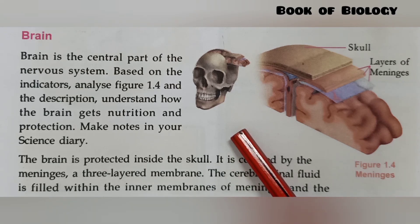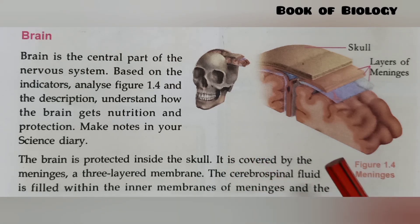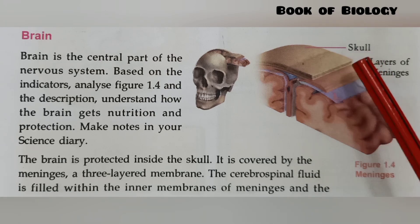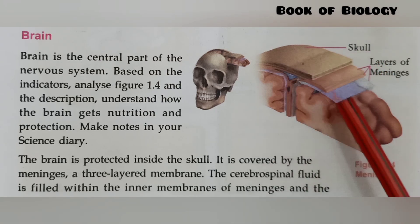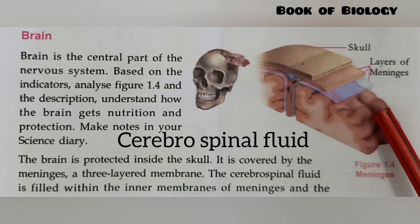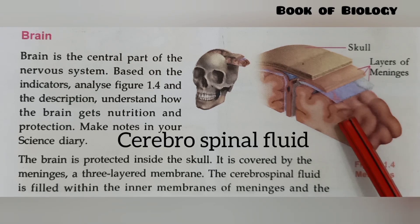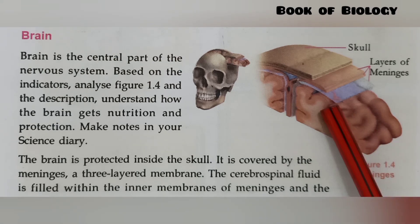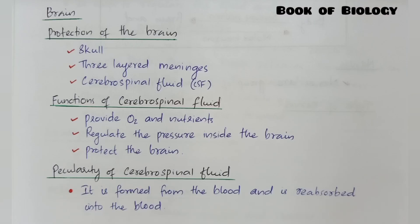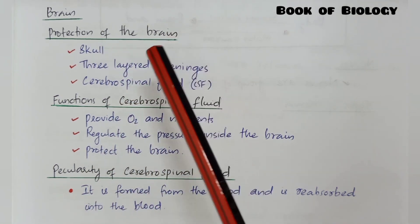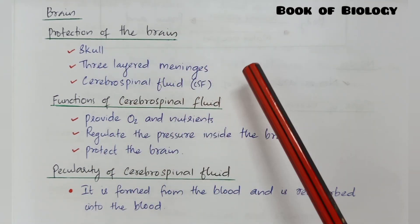The brain is protected in three ways. First, it is protected with the help of the skull. Second, there are three layers of meninges surrounding the brain. Third, there is a fluid called cerebrospinal fluid, or CSF, which also protects the brain from injuries.